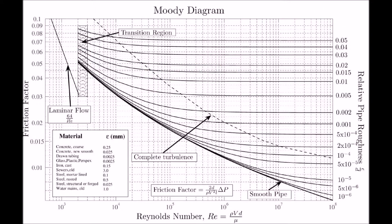Here we have a Moody diagram, and we're going to be discussing this in greater detail when we come to look at turbulent flow. As a basic introduction, we see three different axes. At the bottom we have readings for Reynolds number, on the right hand side we have readings for something called relative roughness, and on the left hand side we use those two things in order to determine our friction factor. Laminar flow occurs at Reynolds numbers below 2,000, and if we inspect our Reynolds number scale, we can see that we have a logarithmic scale.